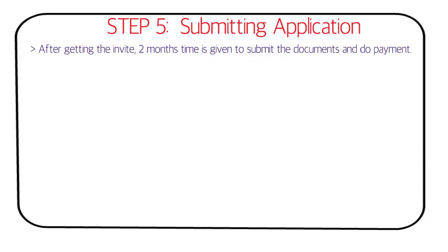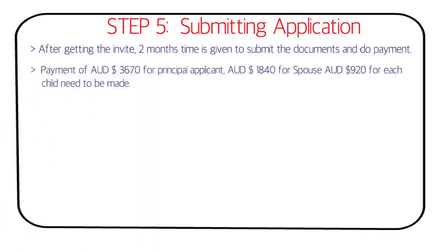Step five is submitting your application. After receiving the invite, you are given two months to submit documents and make payment. Previously, the process was split — payment first and then about one month for documents — but now you have two months to do both simultaneously. Payment is around 3,670 Australian dollars for the primary applicant.